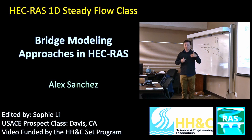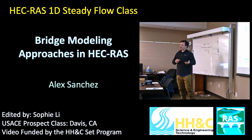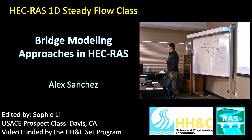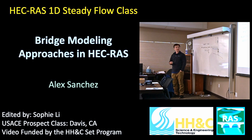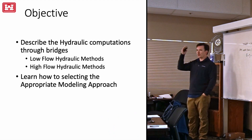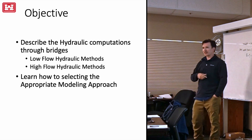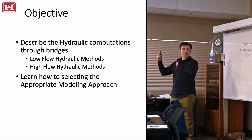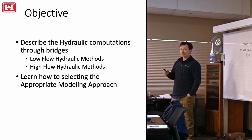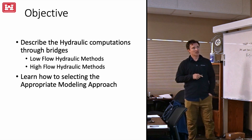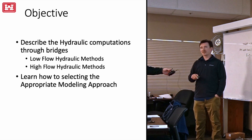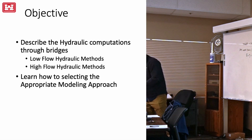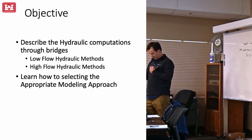It's best to use different approaches and I'll explain how they work and when you would use one versus another. The objective is to talk about the different modeling approaches for both low flow and high flow. Low flow is when the flow is going underneath the bridge — it's not impacting the deck, it's not going over the bridge. High flow is when it's impacting the bridge or going over it, with pressurized flow and overtopping. We'll also cover unique cases like skewed bridges.